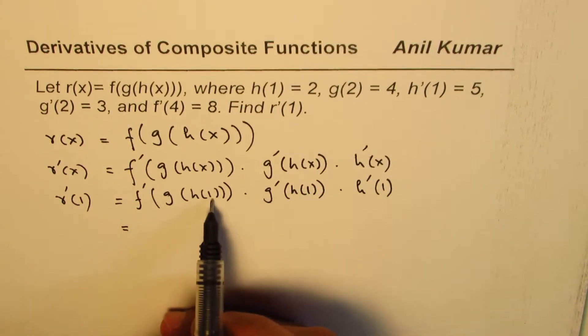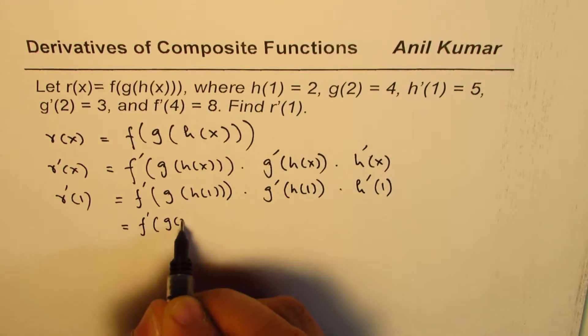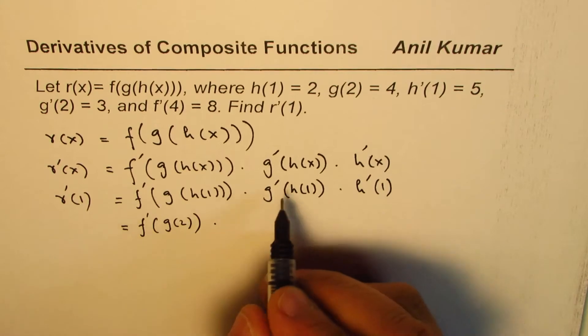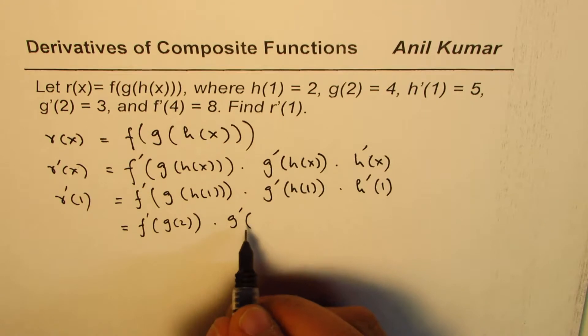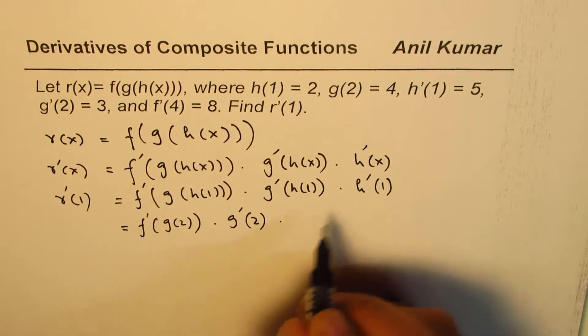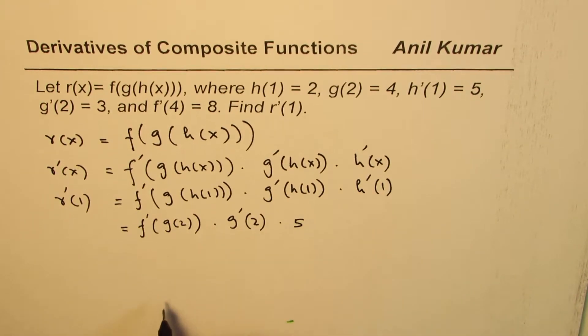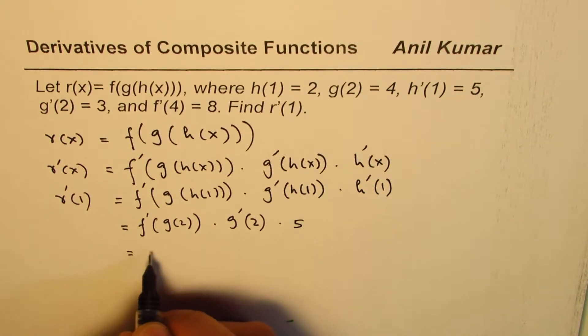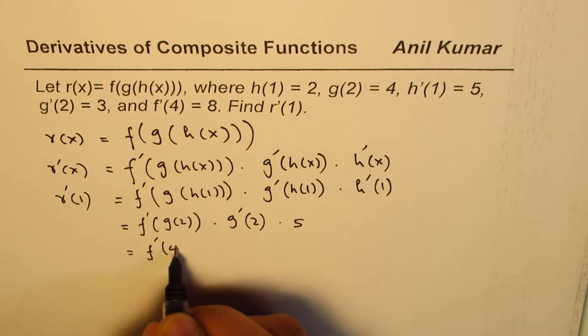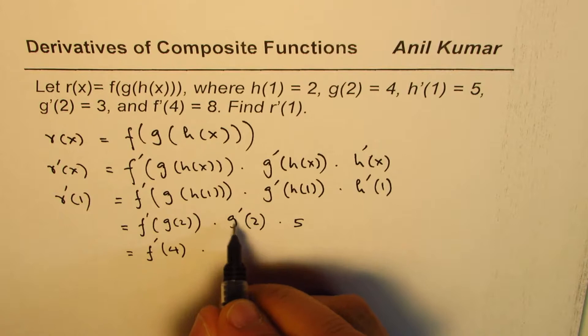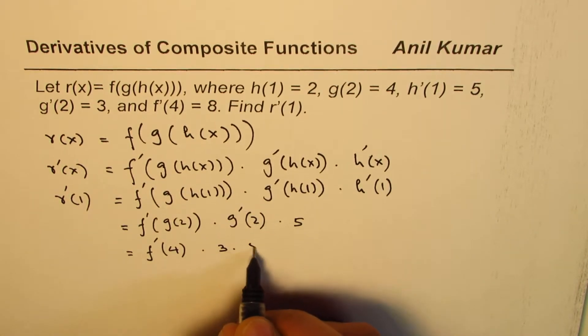Now what is h(1)? h(1) is given to us as 2, so we can write this as f'(g(2)) times g'(h(1)). h(1) is 2, so we'll write 2 here. And h'(1) is 5, so we can replace this by 5. Now g(2) is given to us as 4, so we can write this as 4. g'(2) is 3, so we'll write 3, and we already have 5.